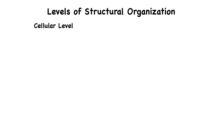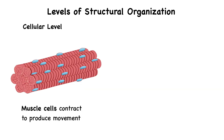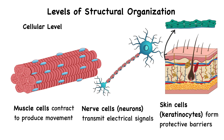Next, we move up to the cellular level. Cells are the smallest living units in the human body, capable of carrying out all the basic processes that define life, such as metabolism, growth, and reproduction. In fact, nothing simpler than a cell is considered truly alive — the cell is the smallest unit of life. The human body contains many different types of cells, each uniquely structured to perform specific functions. For example, muscle cells contract to produce movement, nerve cells transmit electrical signals, and skin cells form protective barriers. While they all share some common features, their specialized roles are what allow the body to function as a coordinated whole.